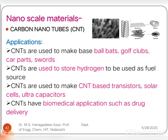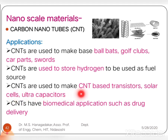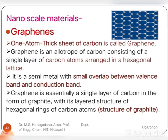Applications of CNTs include their use in making baseball bats, golf clubs, car parts, and swords. They are also used for hydrogen storage as a fuel source. Carbon nanotubes are used to make carbon nanotube transistors, solar cells, and ultracapacitors or supercapacitors. CNTs are also used in biomedical applications like drug delivery systems.